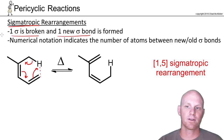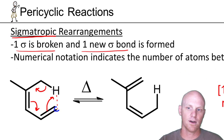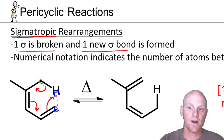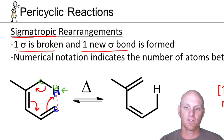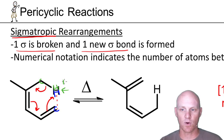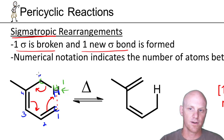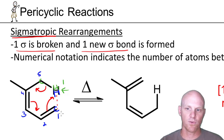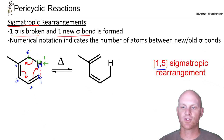We have a special numerical notation that describes these sigmatropic rearrangements. We're forming a new sigma bond here and breaking a sigma bond here. Where we're forming one and breaking one, they're the same atom, so we say they're one apart. On the other side, going around the horn — one, two, three, four, five — it takes five atoms to get there, including the ones involved. So we call this a 1,5 sigmatropic rearrangement.